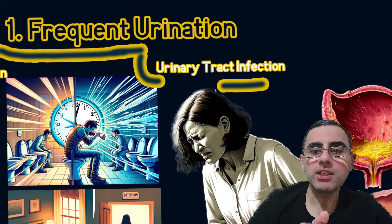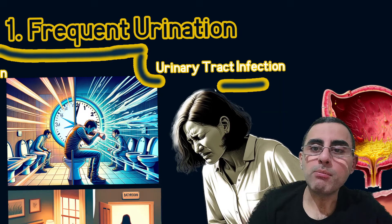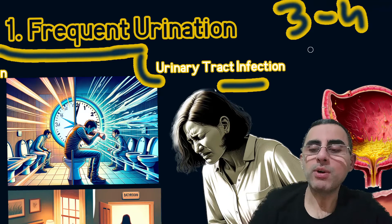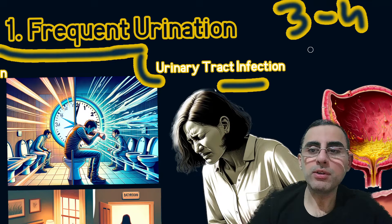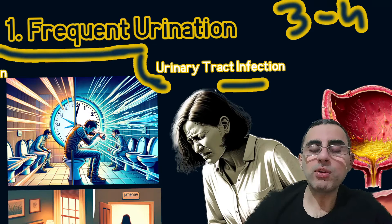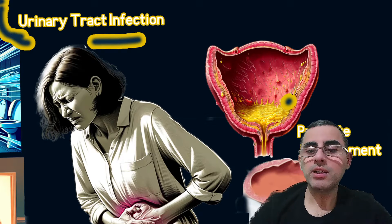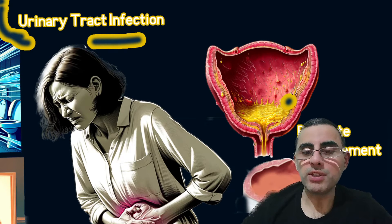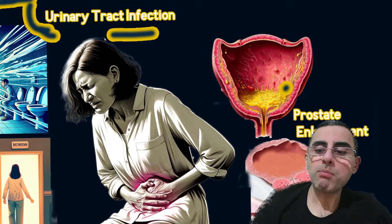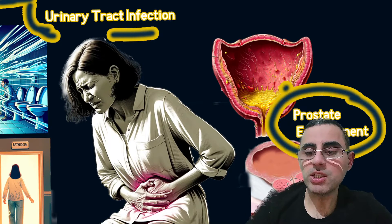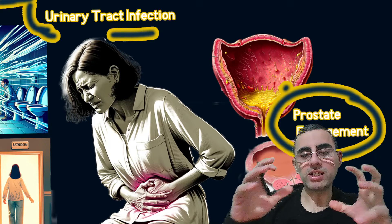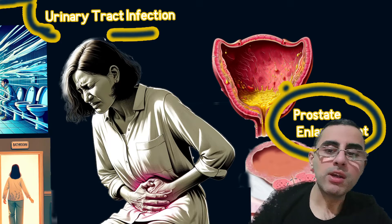Frequent urination means if a person goes to the toilet more than every three to four hours, or if the person wakes up during the night several times to urinate. Urinary tract infection causes bacterial irritation of the bladder, making it contract and causing frequent urination and a sense of urgency. Sometimes prostate enlargement also causes frequent urination because the enlarged prostate compresses the bladder.